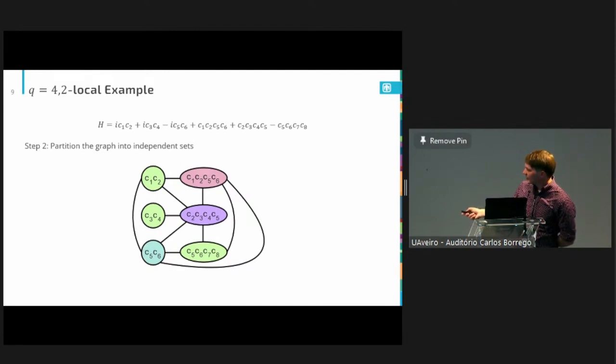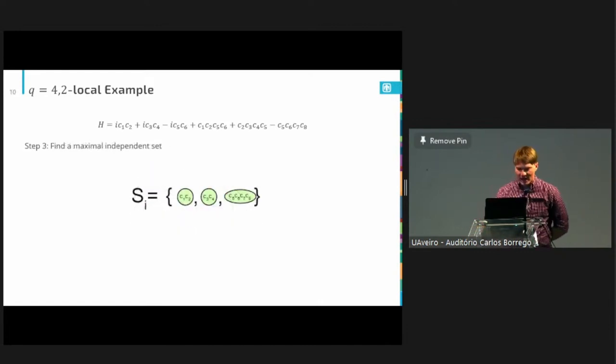So let's consider this simple toy Hamiltonian, which is a sum of a couple of two local terms with some four local terms. And this is where you see the importance of having H either be real or purely imaginary. In order to get that H is Hermitian, we need the two local terms to have a complex number out in front of them. So step one for our algorithm starts with building the interaction graph of this Hamiltonian. And you build the graph according to some fairly simple rules. The vertices in your interaction graph are just the gammas that you have in your Hamiltonian. And then you connect two vertices if and only if one of the following two conditions occurs.